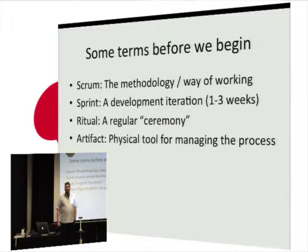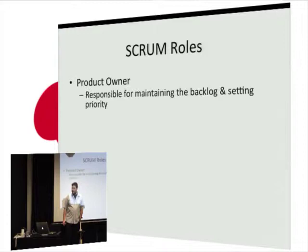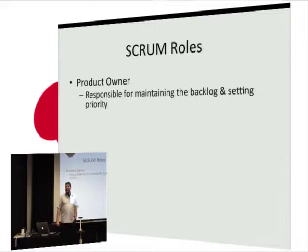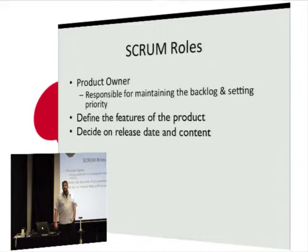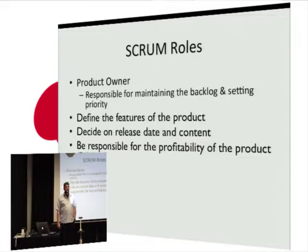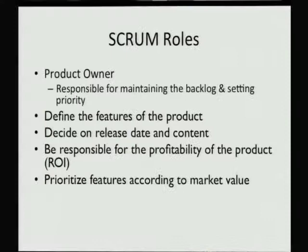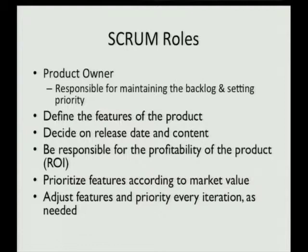The product owner usually sits on the business side and is responsible for maintaining the backlog of work — everything that needs to be produced for a product. They set priority throughout, decide what the team picks up and when, define the features of the product, and decide on release dates. They're mostly responsible for the profitability of the product, prioritising features by market or business value, and they accept or reject work results at the end of each sprint.